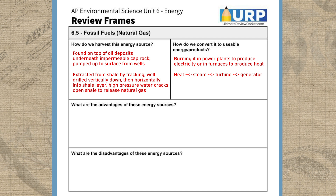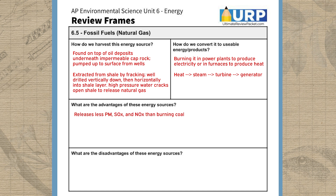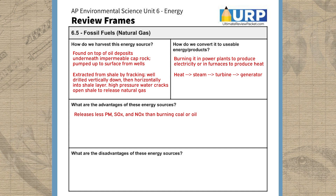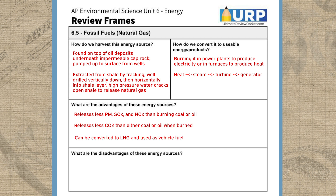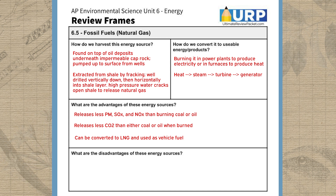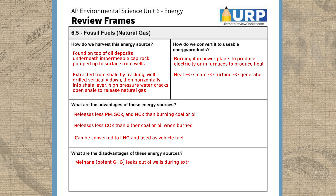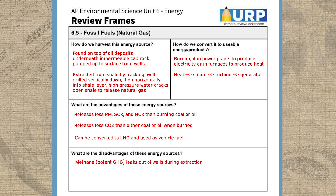For the advantages of natural gas, burning it releases far fewer air pollutants like particulates, SOx, and NOx compared to burning coal or oil. It also releases less CO2 per unit than either of these fossil fuels. Additionally, it can be converted into liquefied natural gas and used as a replacement fuel for gasoline.